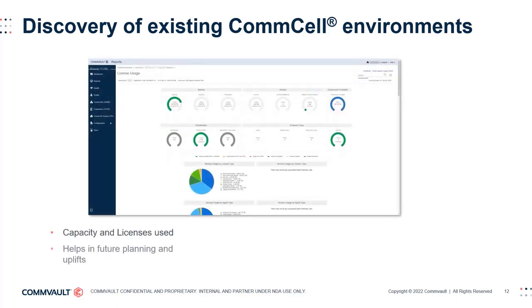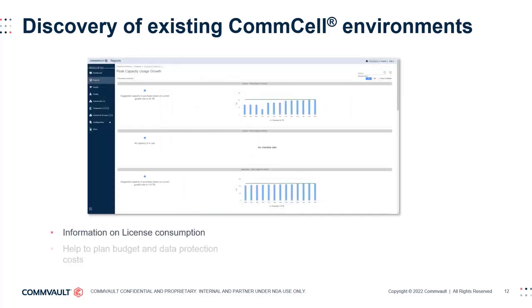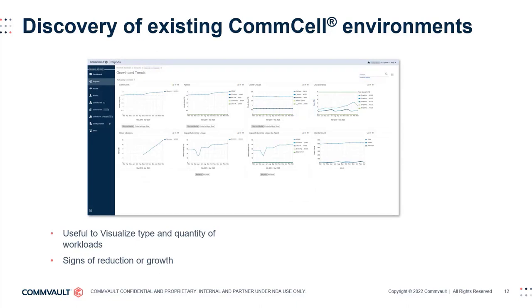The License Usage Report provides information about the number and types of licenses used, including the percentage of capacity consumed, types of licenses used, and the number of users who consume licenses. This is useful to gain insight on the current environment usage, as well as enabling discussions about conversions or upgrades from legacy licensing models, future planning, and uplifts. The Peak Capacity Usage Report displays information about license consumption over time and predicts license consumption in the future, helping customers plan and budget data protection costs. The Growth in Trends Report includes several charts displaying information about media size, app size, and number of clients for entities such as CommCells, agents, and client groups — useful to visualize workload types and quantities, and areas showing signs of reduction or growth, such as cloud libraries.